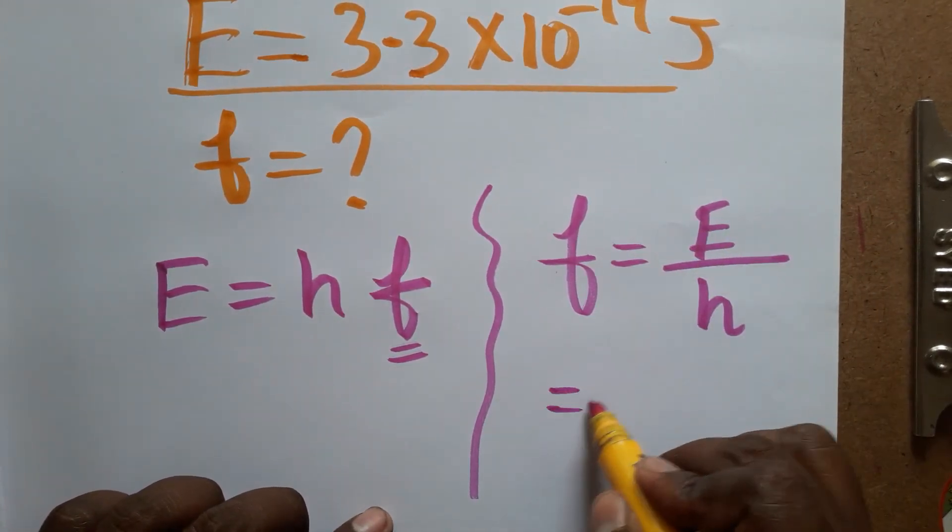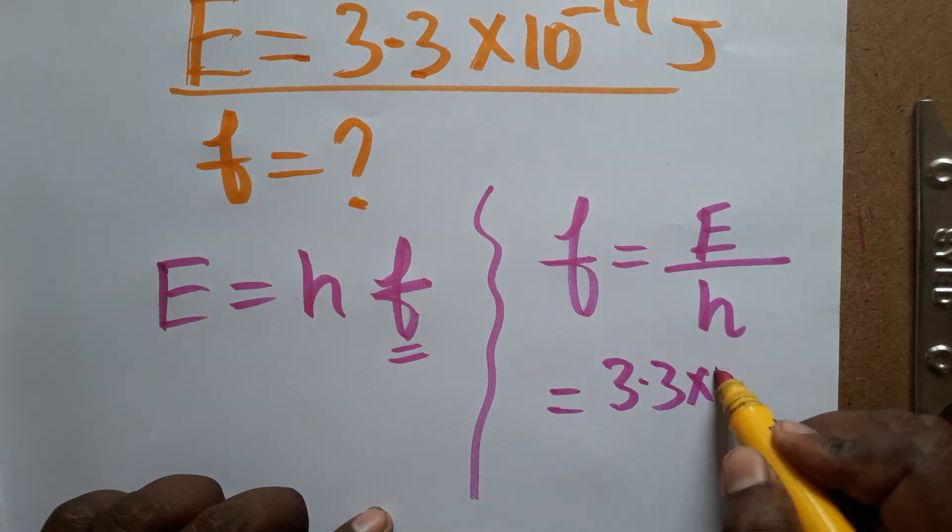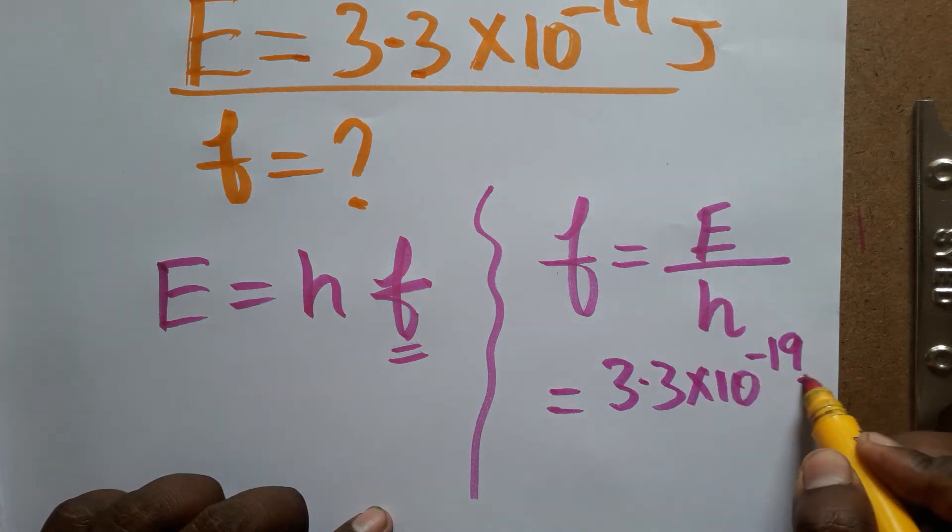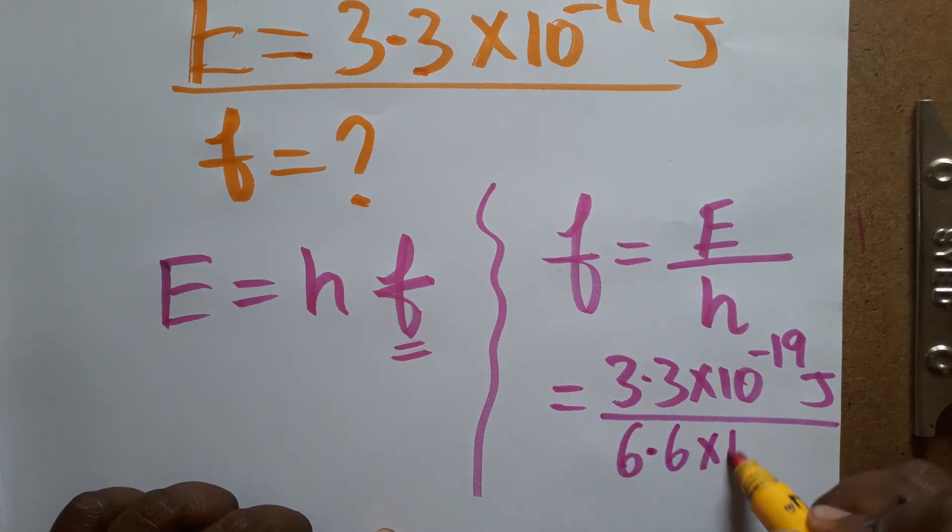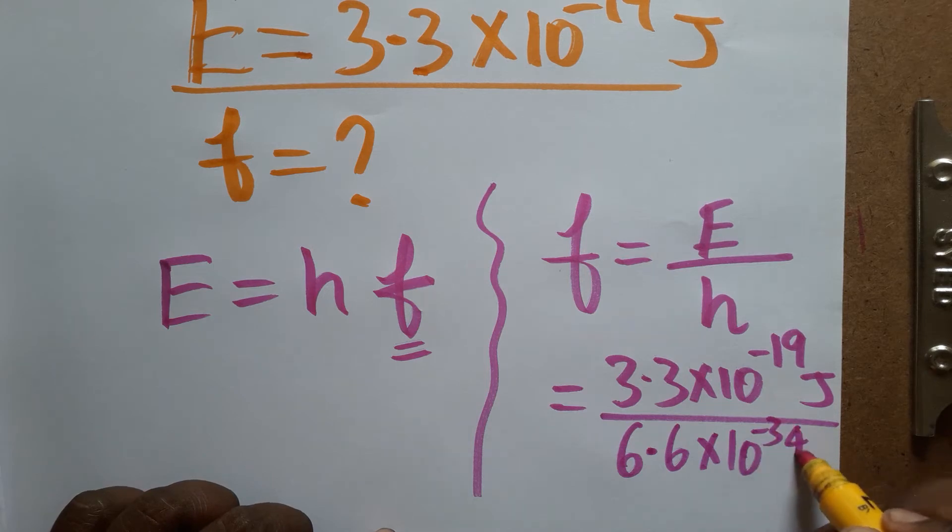Energy is given as 3.3 into 10 power minus 19 joules. Planck constant value, already we know, it is 6.6 into 10 power minus 34. The Planck constant unit is joule into second.